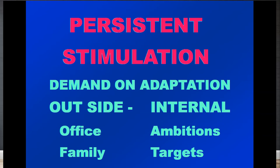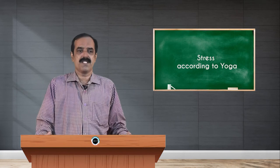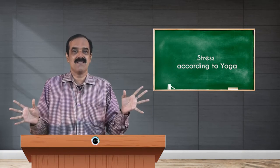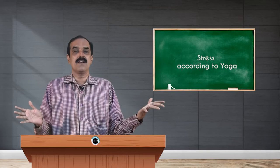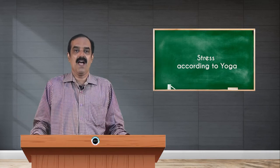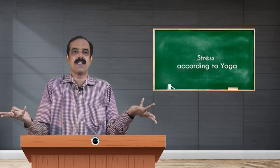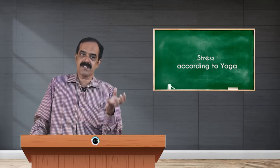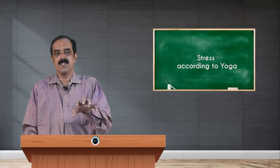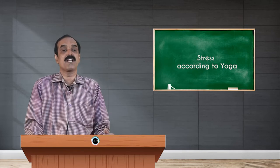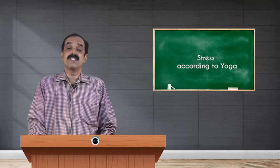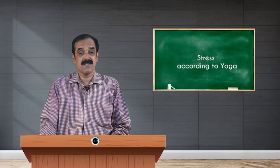How does that persistent stimulation arise? It comes from outside — office, family — and also internally. It is not only external factors that cause disease; internally, when our ambitions are not fulfilled, when our targets are never reached, both internal and external stress accumulate. That is what Krishna calls adhi — repeated thinking. Similarly, Patanjali calls it kleshas, and Yoga Vasishtha calls it adhi.